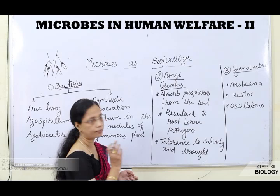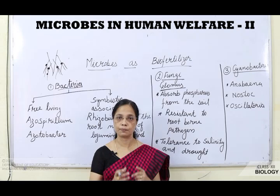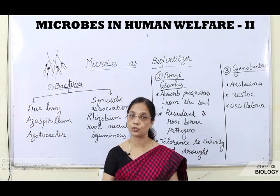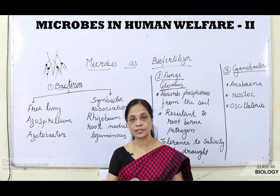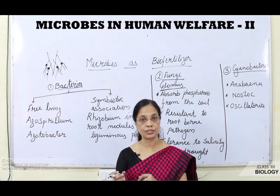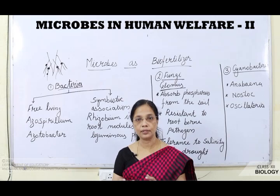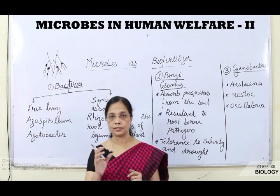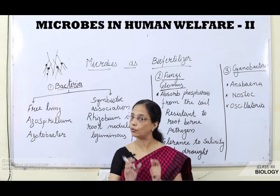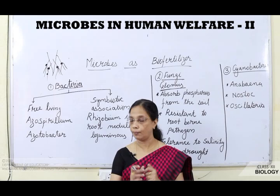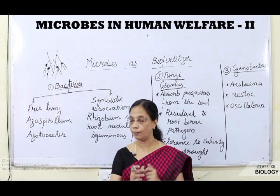To summarize what we have studied: many microbes are used in various beneficial roles. For biogas production, methanogens are used. For biocontrol, living organisms act as predators — ladybirds, dragonflies, centipedes, lizards, spiders, cats — and pathogens like Bacillus thuringiensis (Bt), fungus Trichoderma, and baculovirus control pests and insects.